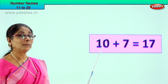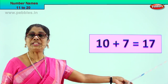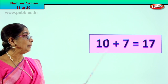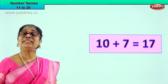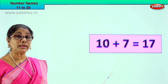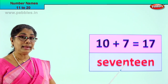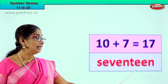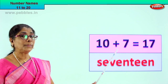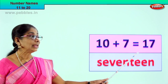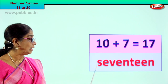Let's go to the next exercise. Look! 10 plus 7 is equal to 17. Read with me — 10 plus 7 is equal to 17. How do we write 17 in words? And we write it in words — S, E, V, E, N, T, E, E, N. 17 in words.